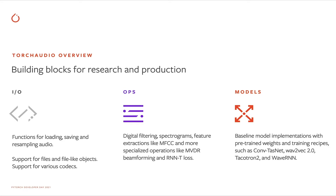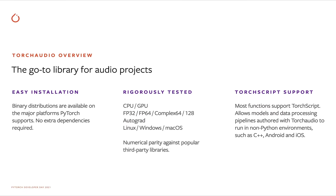TorchAudio has model definitions and training recipes. It also has support for pre-trained weights. The reason to use TorchAudio when starting an audio project is that it is easy to install, rigorously tested, and supports TorchScript. It supports the major platforms that PyTorch supports, and is tested for CPU-GPU compatibility, various data types, and autograd correctness. We also ensure numerical quality against popular third-party libraries.